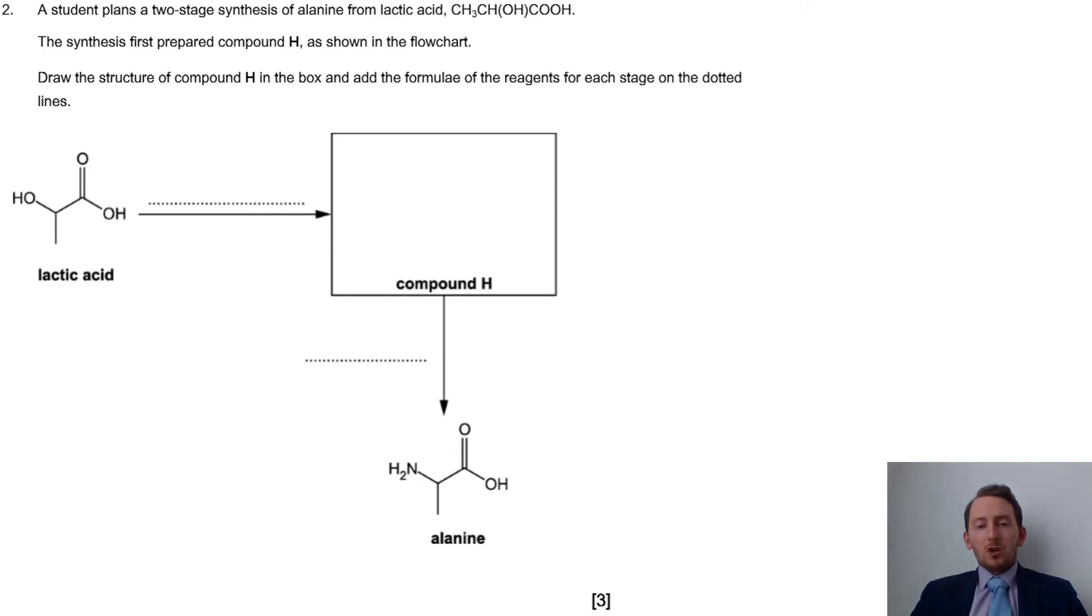Now, how are we going to get to compound H? Well, what can we do with the lactic acid? So we're leaving that COOH alone, and we know pretty much where that OH group is. That's going to be changing somewhat, isn't it? Now, what would probably be the best thing to do would be to swap out that OH group with a halogen.